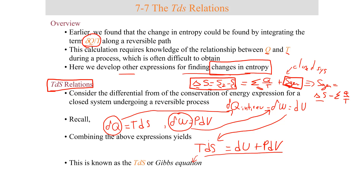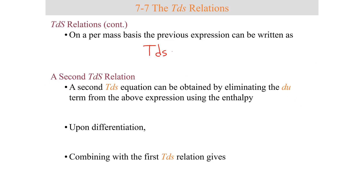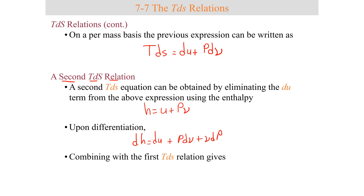The Gibbs equation allows us to solve for T dS and eventually for dS, which gives the change in entropy. We can express this on a per-mass basis as the specific form. A second TDS relationship is derived by recalling that enthalpy equals U + P nu. Differentiating and applying the chain rule, then substituting into the Gibbs equation, yields a second TDS relationship: T dS = dH − nu dP.